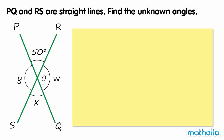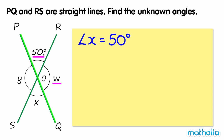PQ and RS are straight lines. Find the unknown angles. Angle X is vertically opposite to angle POR, which is 50 degrees, so angle X equals 50 degrees. Note that angle POR and angle W are on the straight line PQ.